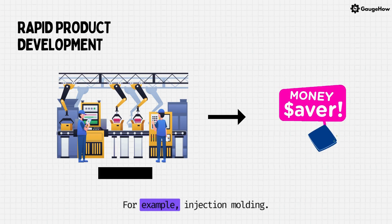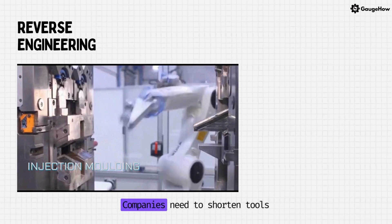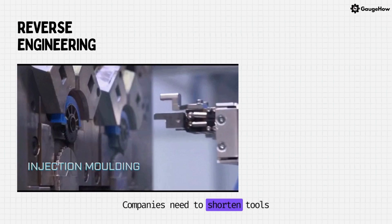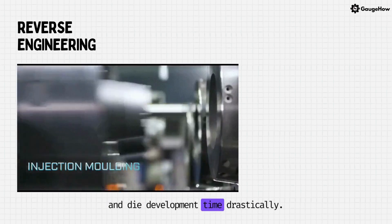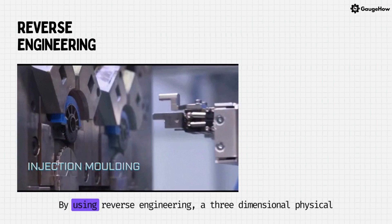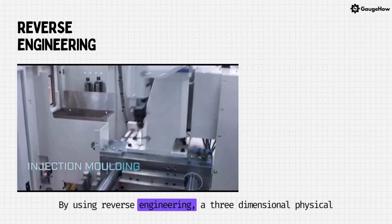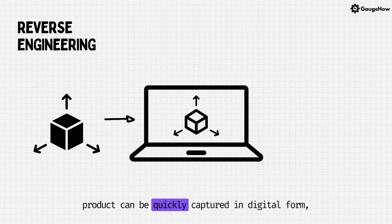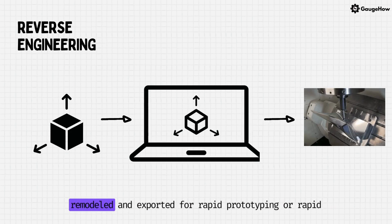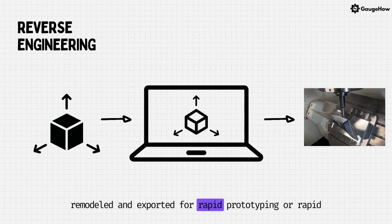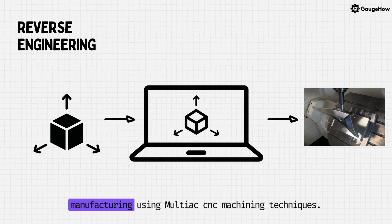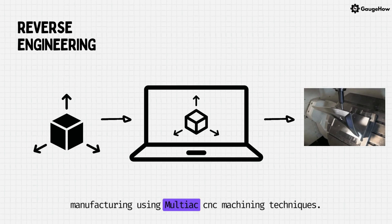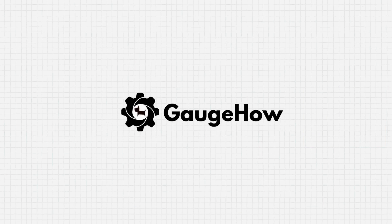For example, injection molding companies need to shorten tool and die development time drastically. By using reverse engineering, a three-dimensional physical product can be quickly captured in digital form, remodeled and exported for rapid prototyping or rapid manufacturing using multi-axis CNC machining techniques.